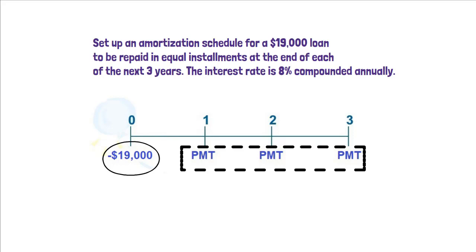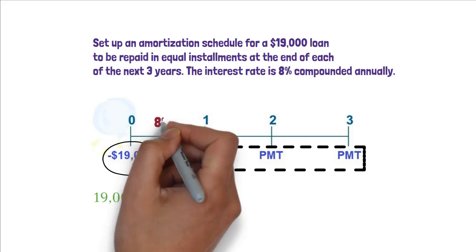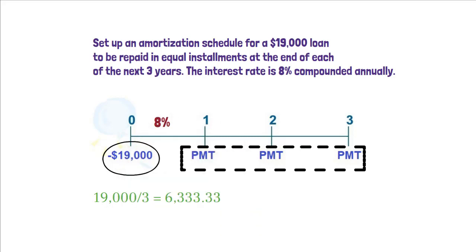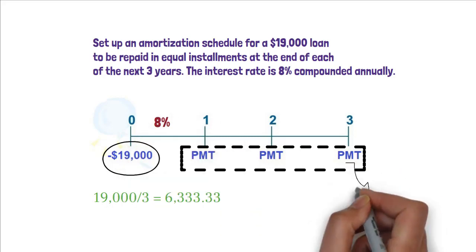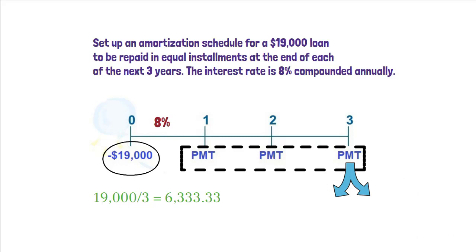If there was no interest on the loan, the calculation would have been very simple — just divide $19,000 by 3 to get the installment. However, there is 8% interest on the loan, so each of your payments will consist of interest and some repayment of principal. The installment is the PMT that we have to calculate first.